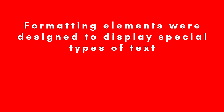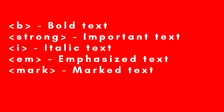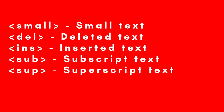We use B for bold text, strong for important text, I for italic text, em for emphasized text, mark for marked text, small for small text, del for deleted text, ins for inserted text, sub for subscript text, and sup for superscript text. Let us look at the examples for each of them.